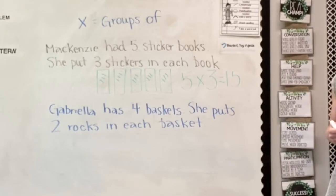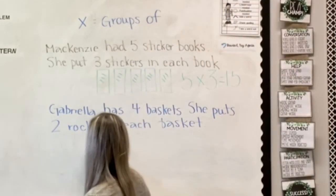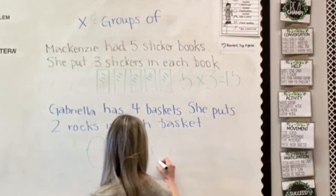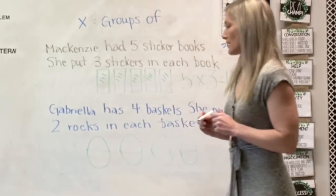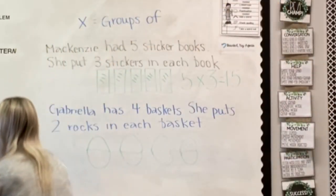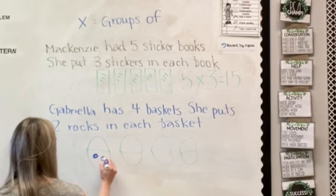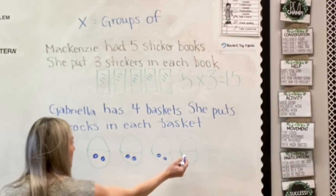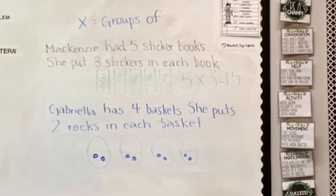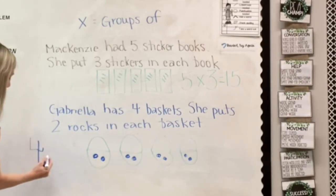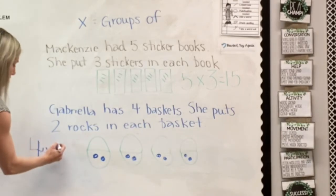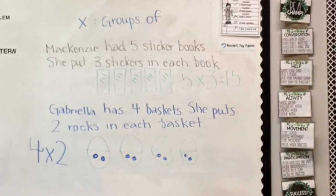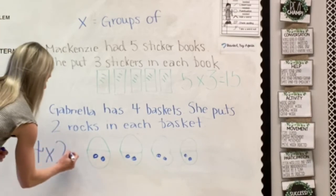Let's try another one. Gabriela has four baskets. She puts two rocks in each basket. Our first step is to draw those baskets — Gabriela has four baskets. Then I need to have two rocks in each basket. So I have an equal amount of rocks in each one of Gabriela's baskets. If I want to write this equation, I would write it like this: I have four groups of two rocks. How many rocks do I have all together? One, two, three, four, five, six, seven, eight — equals eight.